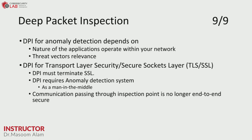Deep packet inspection for anomaly detection depends on the nature of the applications operating on your network, so you must set your objective accordingly. For transport layer or SSL inspection, you must first terminate SSL at your DPI system. Essentially, DPI requires a man-in-the-middle capability — if communication passes through a secure link, you decrypt the traffic, inspect it, and re-encrypt it before passing it to the target host. As a result, communication passing through the inspection point is no longer end-to-end secure.